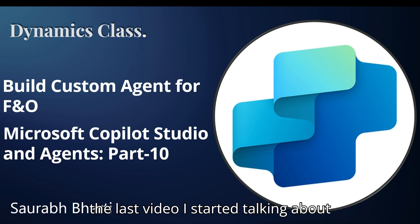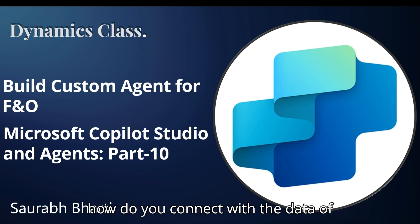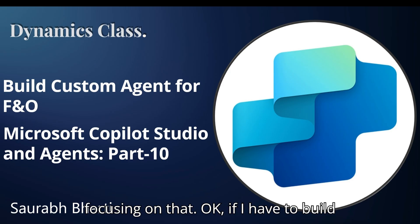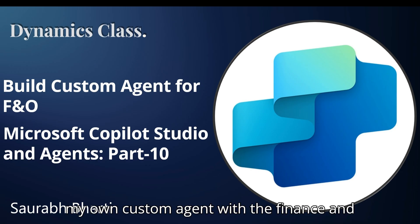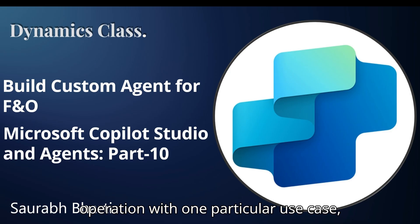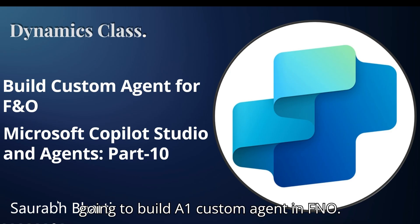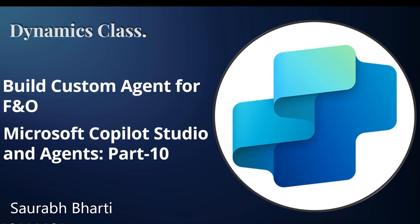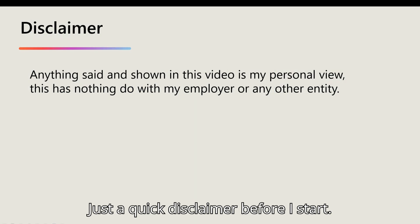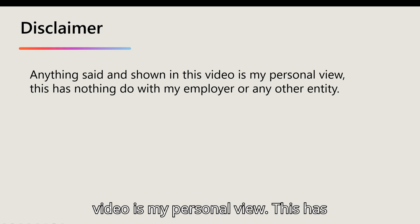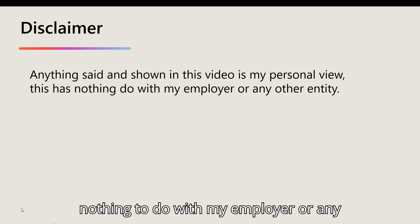In the last video I started talking about how you connect with the data of Finance and Operations. Now I'm focusing on: if I have to build my own custom agent with Finance and Operations for one particular use case, how can I build that? Today we are going to build one custom agent in FnO. Quick disclaimer: anything said or shown in this video is my personal view and has nothing to do with my employer or any other entity.